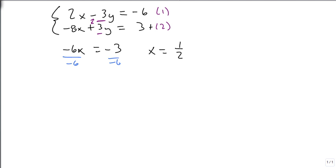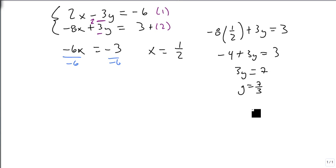We pick our favorite equation. I'm going to pick the second one because they're the same number, but I like the positive. So we're going to get minus 8 times 1 half plus 3y equals 3. So minus 4 plus 3y equals 3. That means 3y equals 7 when we add 4 to both sides. Divide by 3, and get that y is 7 thirds.